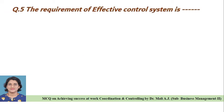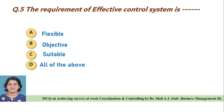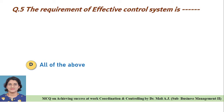Question five: The requirement of effective control system is — Option A: flexible, Option B: objective, Option C: suitable, Option D: all of the above. Correct answer is Option D, all of the above.